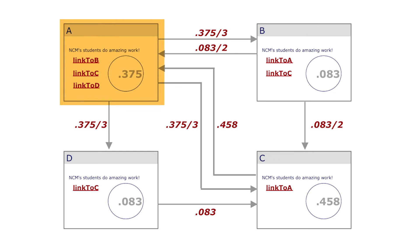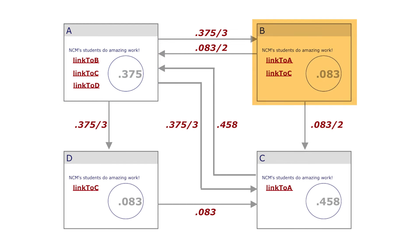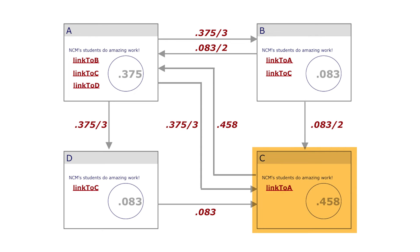So you've confirmed that we did our math right on that first round of page rank computation. What happens next? Well, we repeat this process of dividing a page's page rank among the pages that it points to in equal fractions. So we take A's new page rank of 0.375 and divide it equally among pages B, C, and D. We take B's new page rank of 0.083 and divide it equally among pages A and C. And we do the same thing for pages C and D.